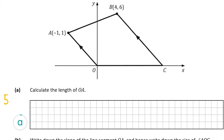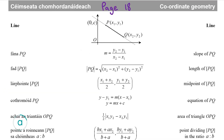Question 1 part A is worth 5 marks and it wants us to calculate the length of OA. We have a formula for this in our formula and tables book on page 18. The formula for the length of a line is the square root of (x2 minus x1) squared plus (y2 minus y1) squared. We need to find x1, y1, x2, y2, pop them into the formula, and work out the distance.